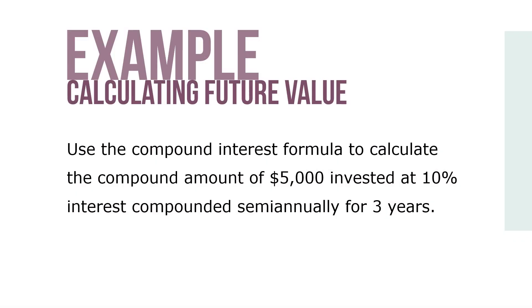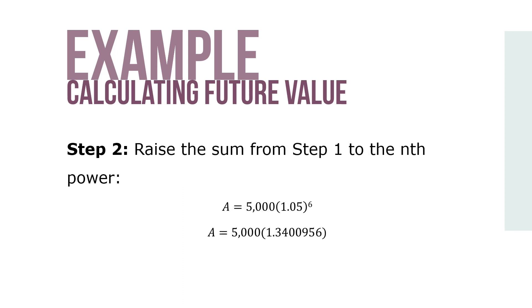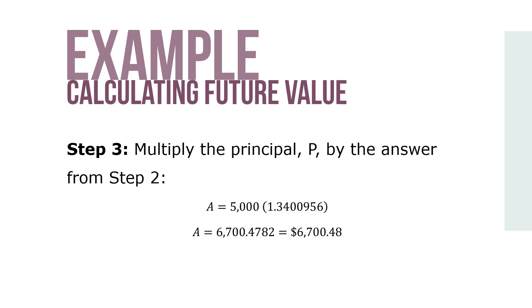Here's an example. Use the compound interest formula to calculate the compound amount of $5,000 invested at 10% interest compounded semi-annually for 3 years. Step 1: Add 1 and the interest rate per period. The rate per period i is 5% (10% ÷ 2 periods per year). The total number of periods n is 6 (3 years × 2 periods per year). Step 2: Raise the sum from step 1 to the nth power. Step 3: Multiply the principal P by the result from step 2. The compound amount A equals $6,748.